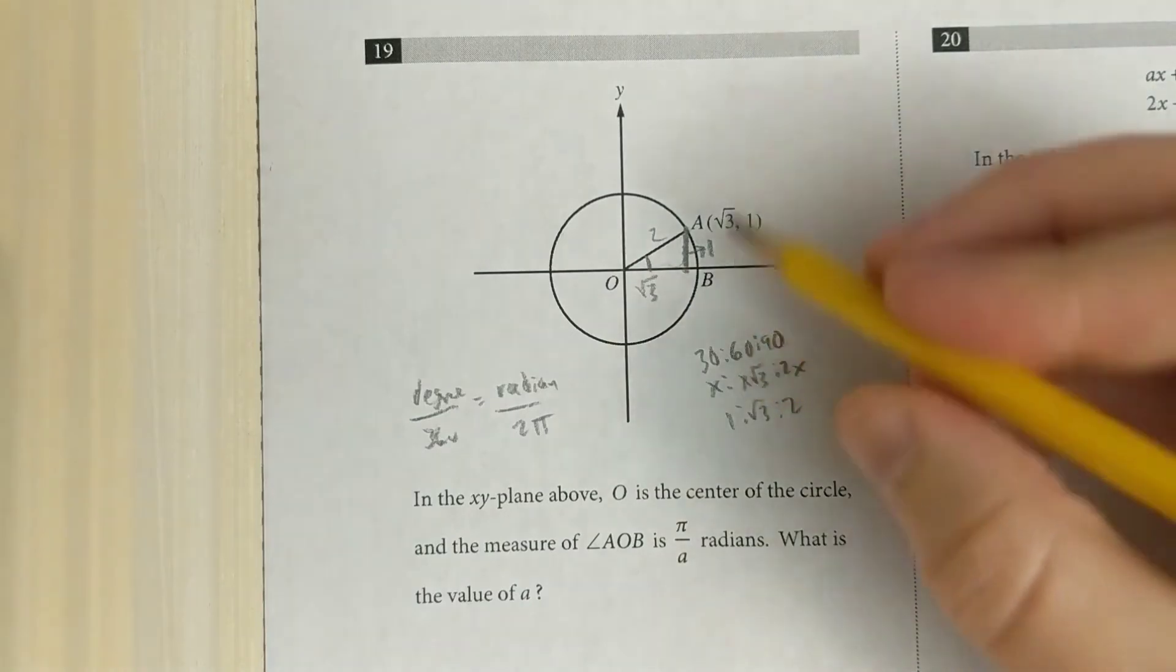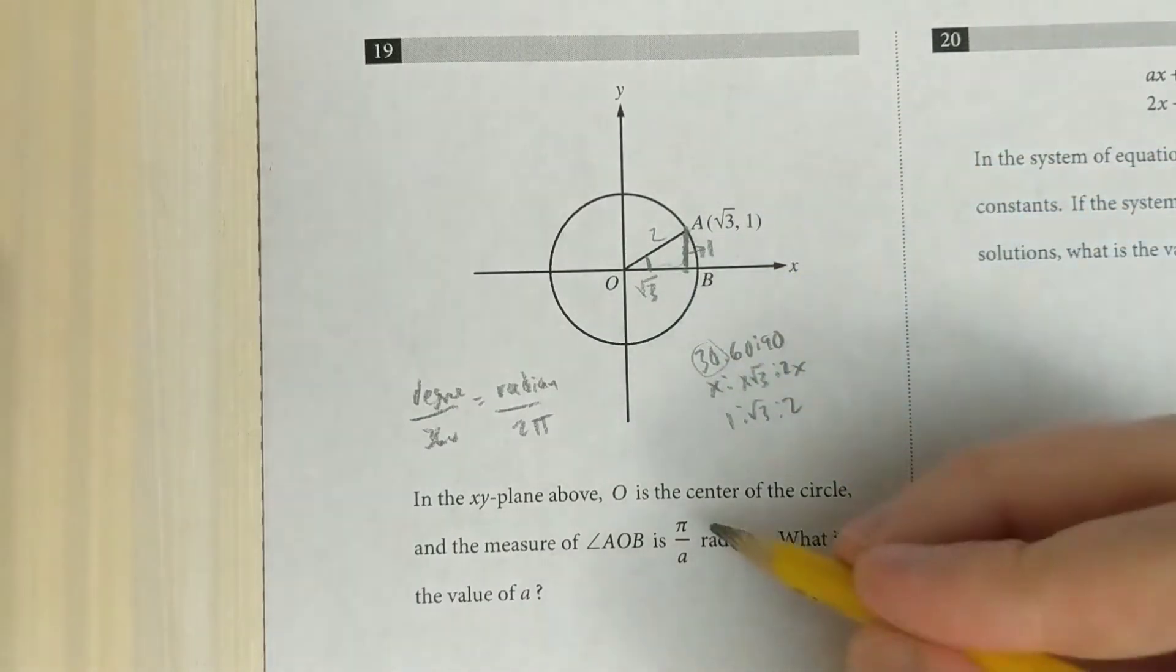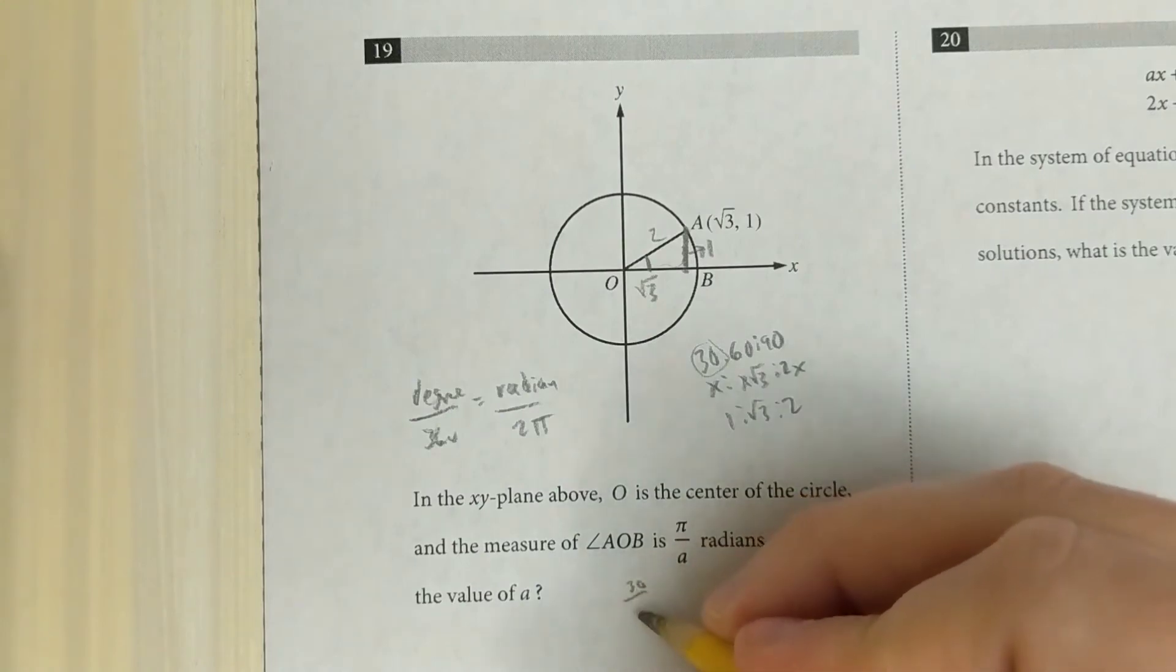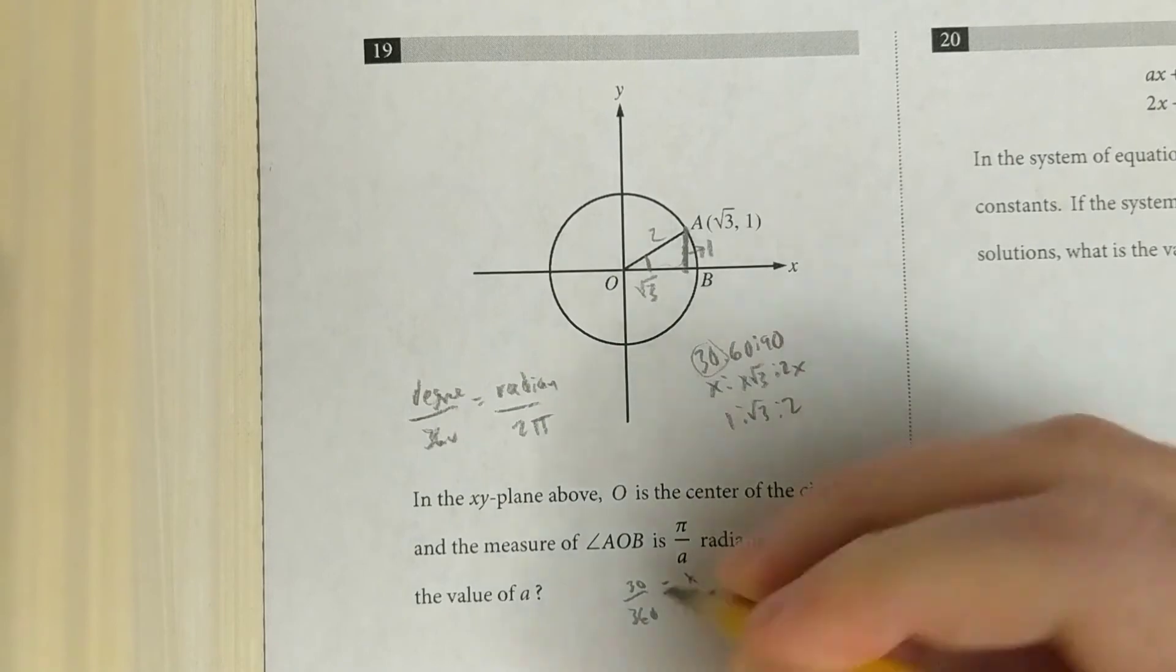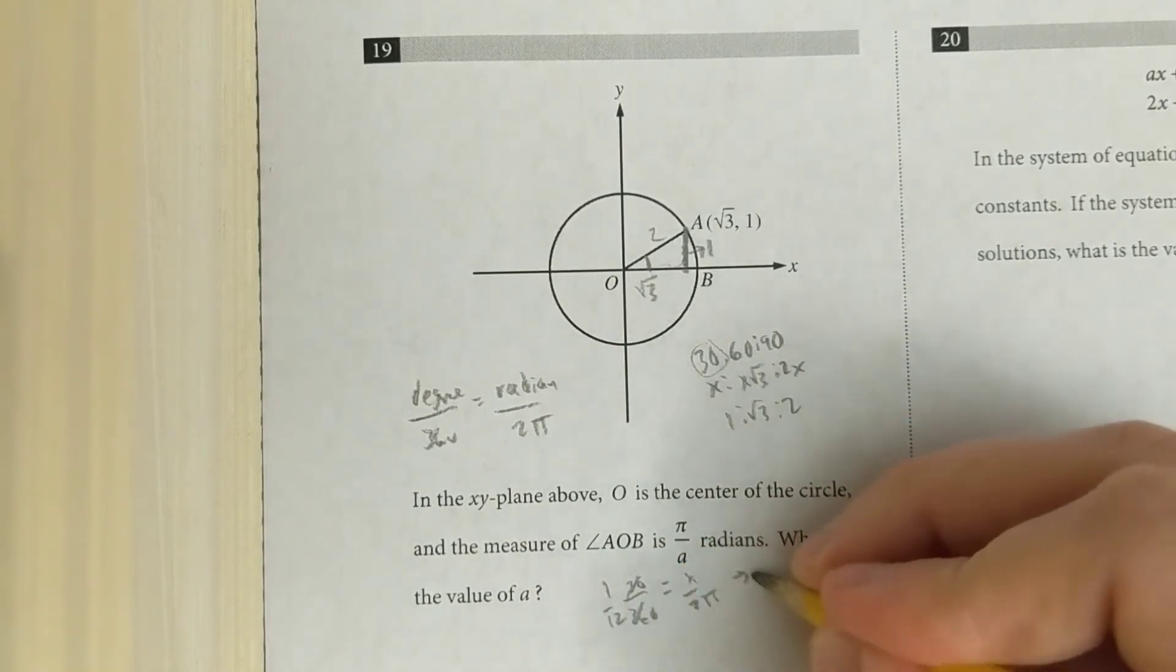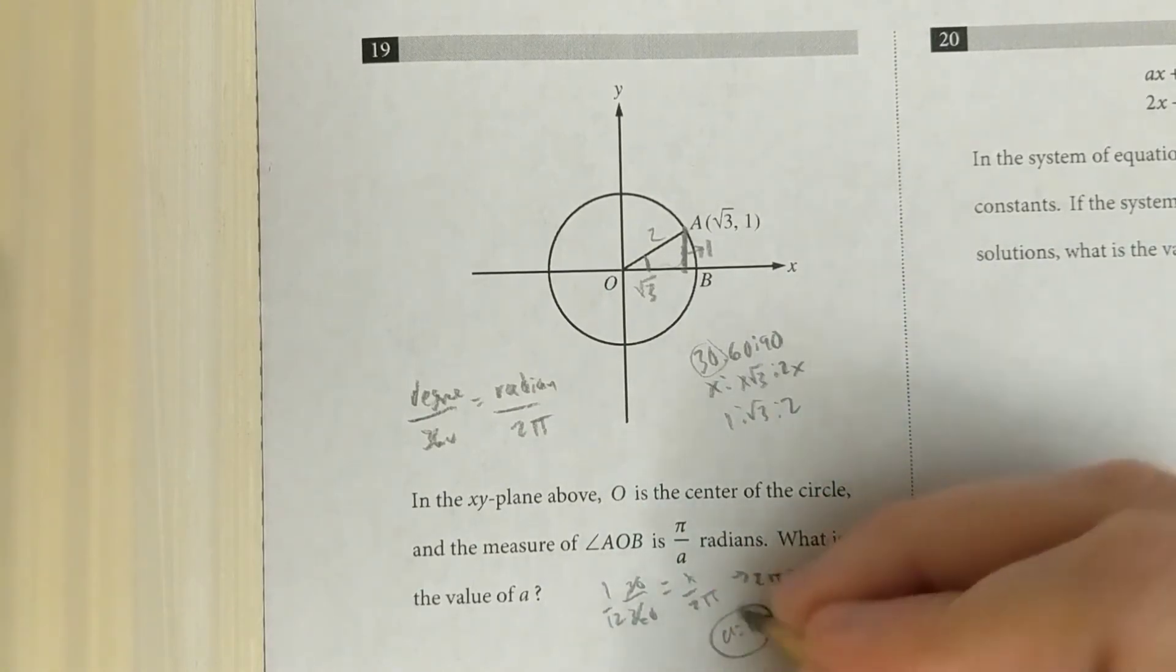And so the angle that I'm looking for is 30 degrees. Now we just have to turn that into radians using our formula here. So we got 30 over 360 equals something over 2 pi. That's the same thing as a 12th over there. When you cross multiply, you get 2 pi equals 12x. And that means when you divide by 12, you're going to get pi over 6 equals x. That equals pi over a, so a must equal 6.